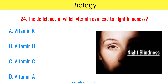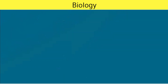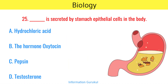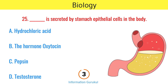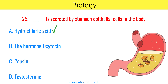The deficiency of which vitamin can lead to night blindness? Vitamin A. What is secreted by stomach epithelial cells in the body? Hydrochloric acid.